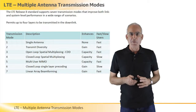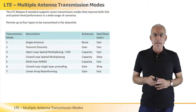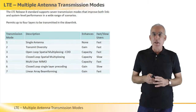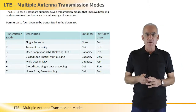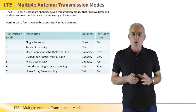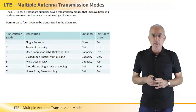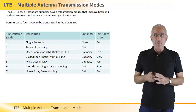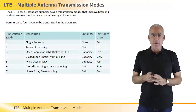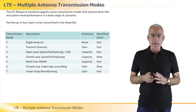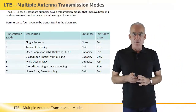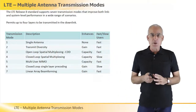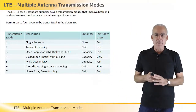LTE networks are expected to provide high data rates with high spectral efficiency and to provide the best possible service to cell edge users. To enable it, the 3GPP has included in the LTE standards the use of multiple antenna techniques that may provide additional robustness to the radio link, or where radio conditions allow it, increased data rate.